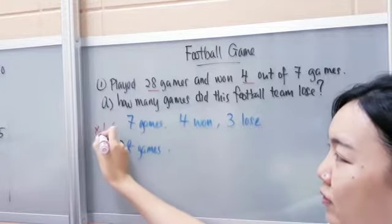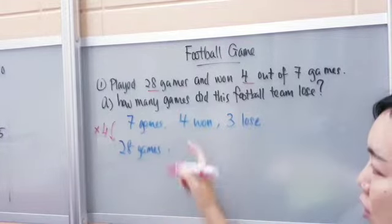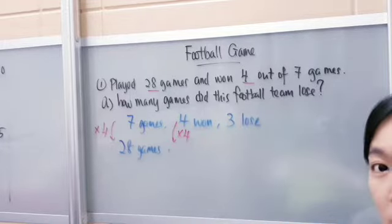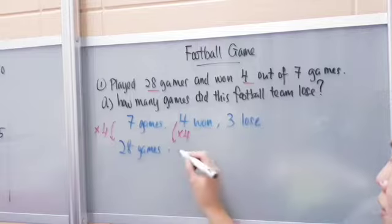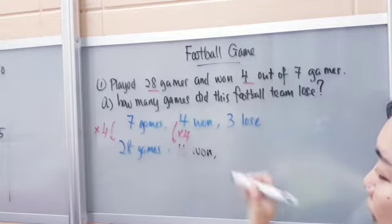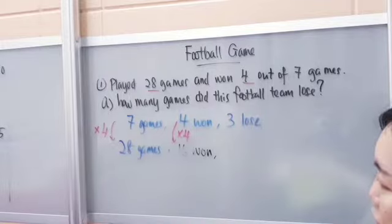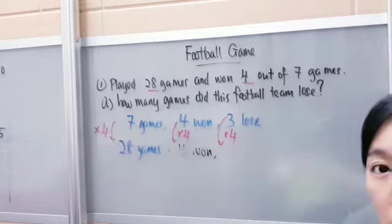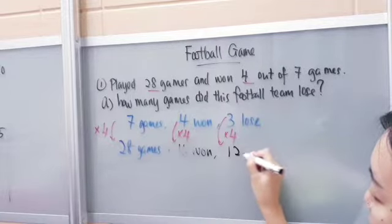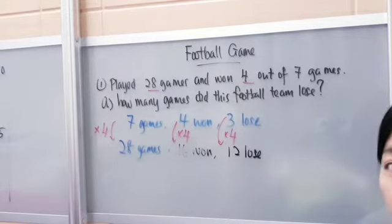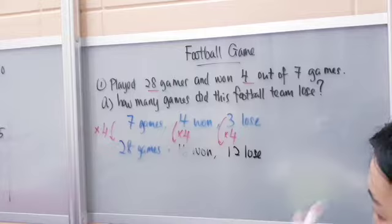What is the relationship between seven games and 28 games? It becomes bigger — 7 times 4 equals 28. So four wins times four equals 16 games won. And three losses times four equals 12 games lost. So the answer to Part A is 12 games lost.